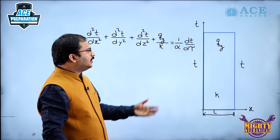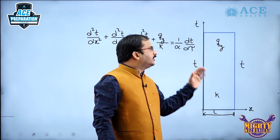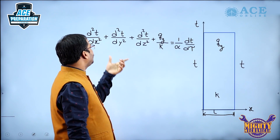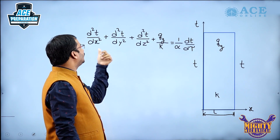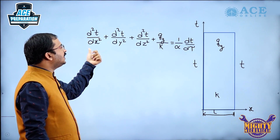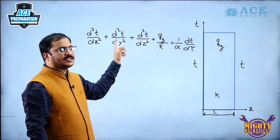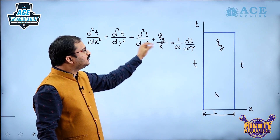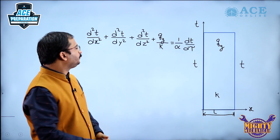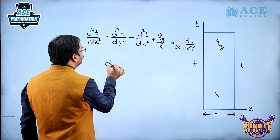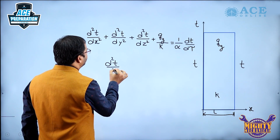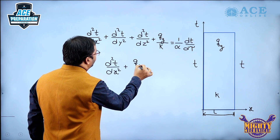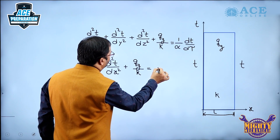Since we have considered steady state, the dT/dτ term will become zero. At the same time, we have considered a one-dimensional condition, so we need to consider only the x-component and do not consider y and z directions. There is internal heat generation, so qg will be there. This equation reduces to: d²T/dx² + qg/k = 0.